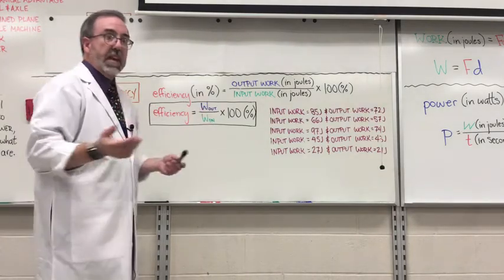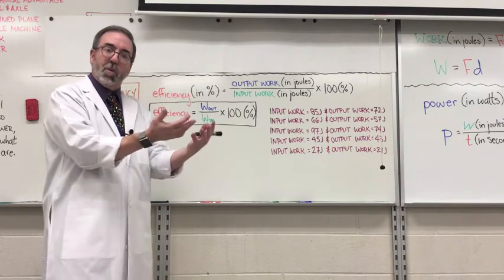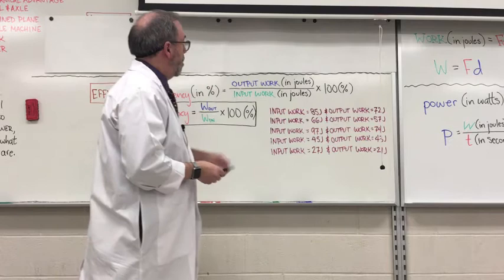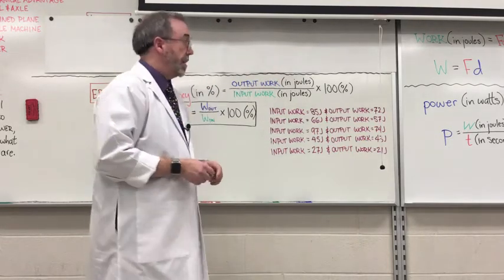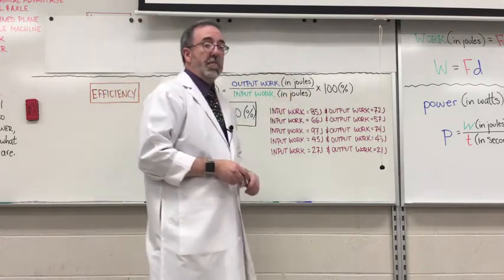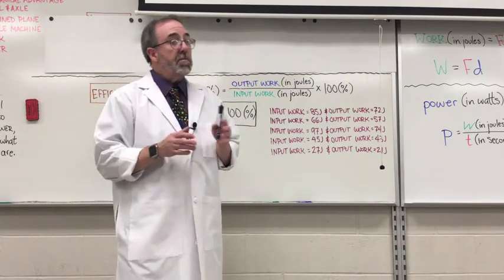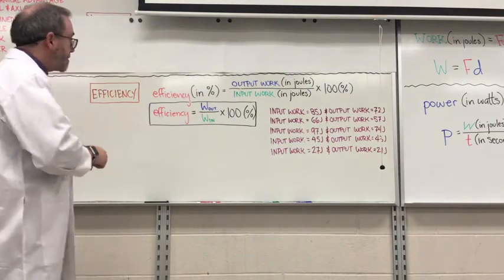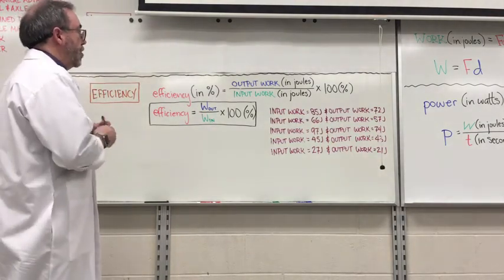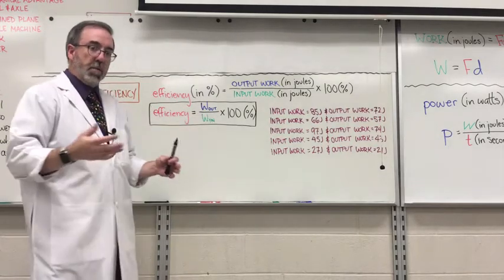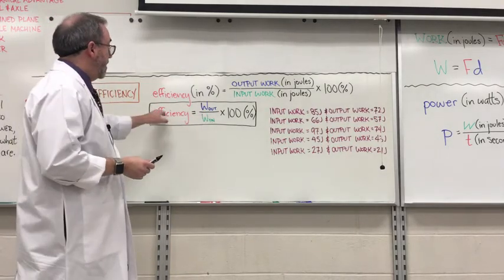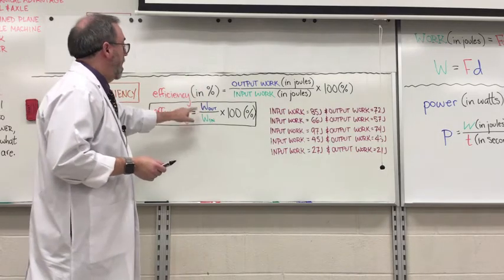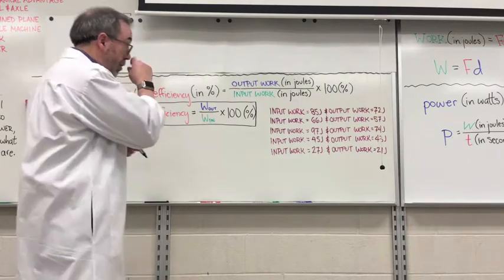Here's the equation. Once again, it's one of those ones where we do the output work first and then the input work. We're going to take the output work, divide it by the input work, and as we've talked about before, work is calculated in joules. Then we're going to multiply it by a hundred and then add percent to it. We're not going to multiply it by a hundred percent because that does something we don't want, and I'll explain that in a minute.